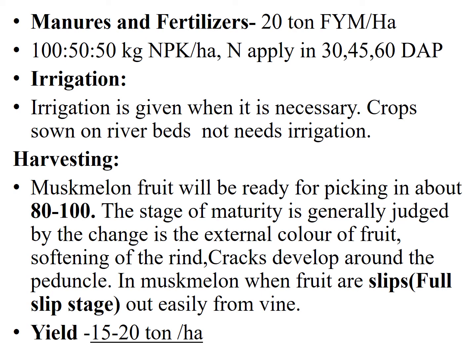The yield is 15 to 20 tons per hectare, and it is dependent on the variety, season, and cultivation practices. This yield may vary from 15 to 20, or 25 to 30 tons per hectare.